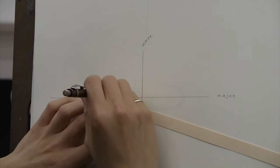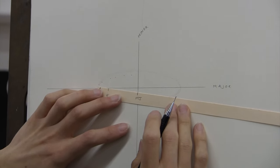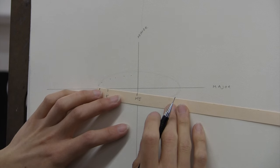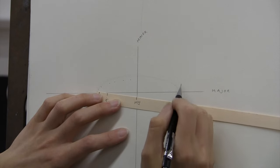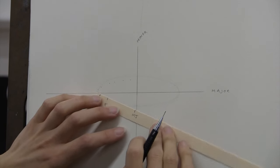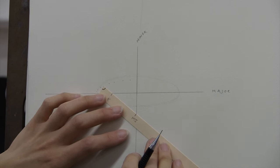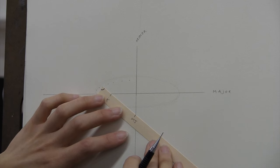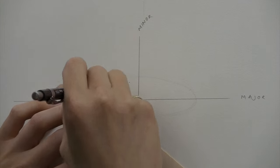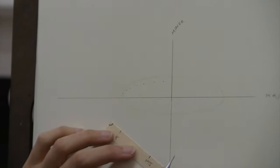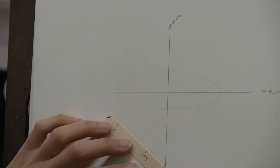The more dots you put down, the more accurate your ellipse is going to be. And there are certain areas of the ellipse that are more challenging to draw, and that's this area right here and that region over there. So I like to put a lot of dots down there just to give myself that extra little help to get the ellipse just right. So I've taken care of one quadrant and I can move on to this one.